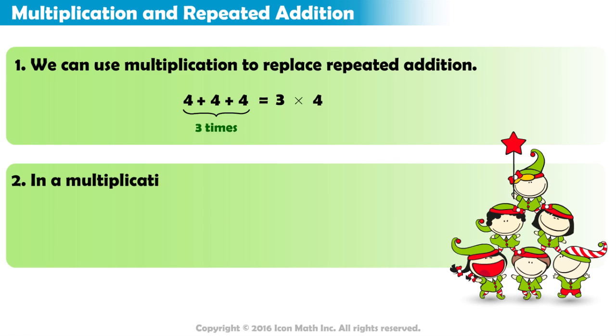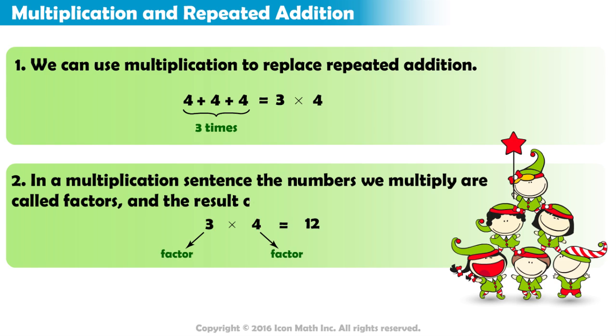In a multiplication sentence, the numbers we multiply are called Factors, and the result of multiplication is called a Product.